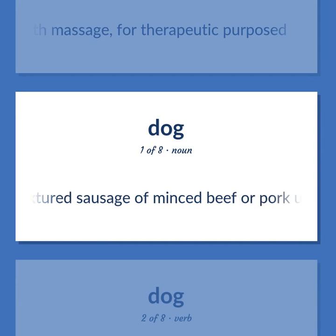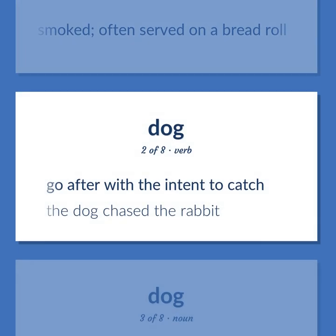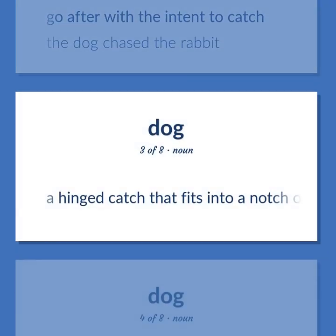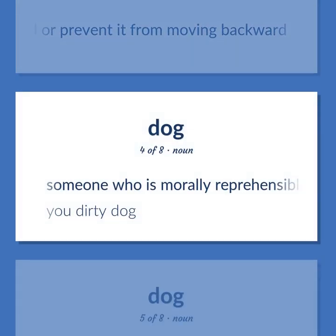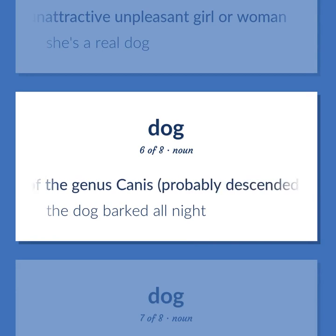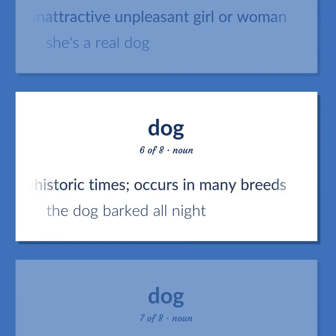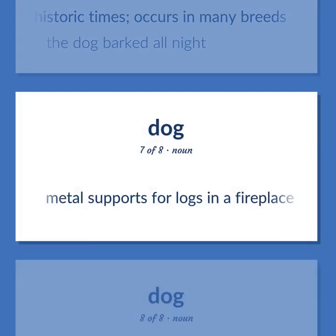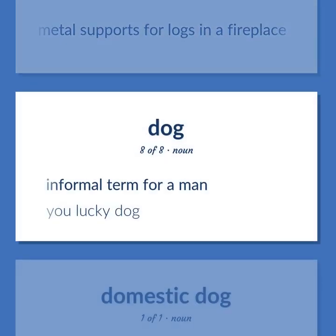A smooth textured sausage of minced beef or pork, usually smoked, often served on a bread roll. DOG. Go after with the intent to catch. The dog chased the rabbit. A hinged catch that fits into a notch of a ratchet, to move a wheel forward or prevent it from moving backward. Someone who is morally reprehensible. You dirty dog. A dull, unattractive, unpleasant girl or woman. She's a real dog. A member of the genus Canis, probably descended from the common wolf, that has been domesticated by man since prehistoric times; occurs in many breeds. The dog barked all night. Metal supports for logs in a fireplace. Informal term for a man. You lucky dog.